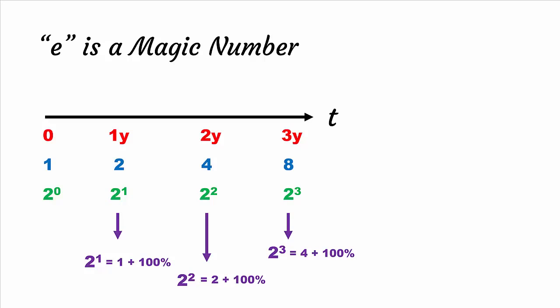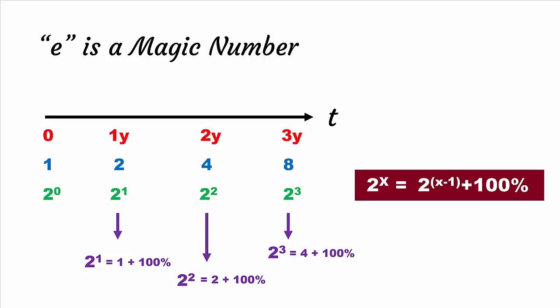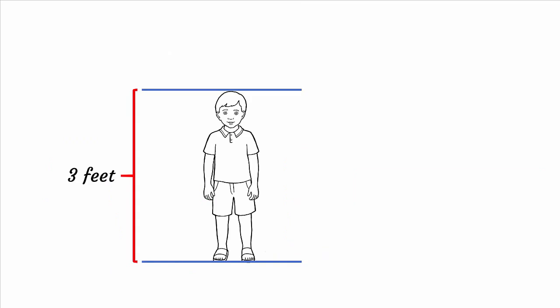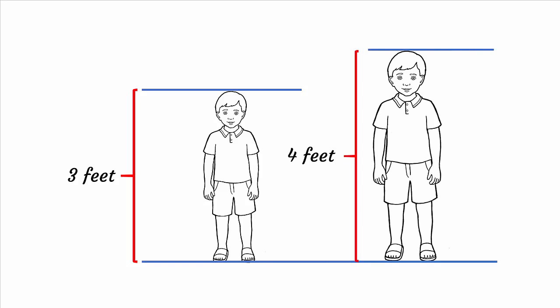We can generalize the formula as shown on the right side. We have assumed that the growth takes place when a year is completed. In fact, it should not be like this. In nature, growth is a continuous process. Somebody having a height of three feet cannot increase to four feet abruptly; it increases gradually.